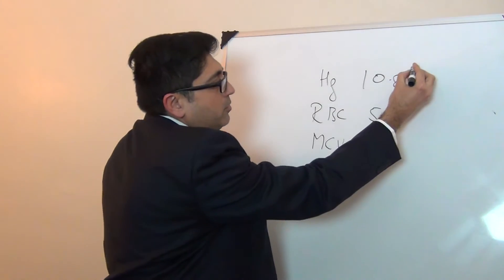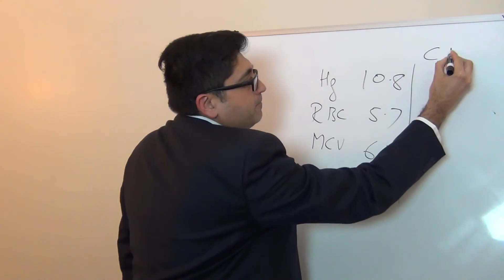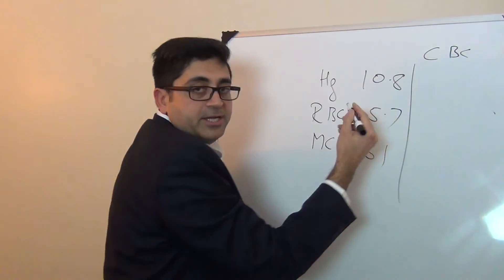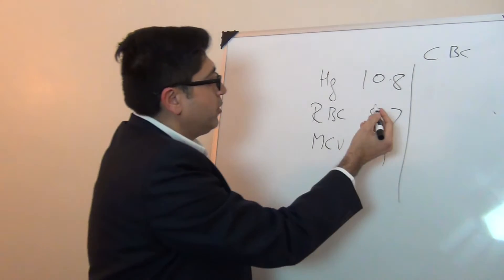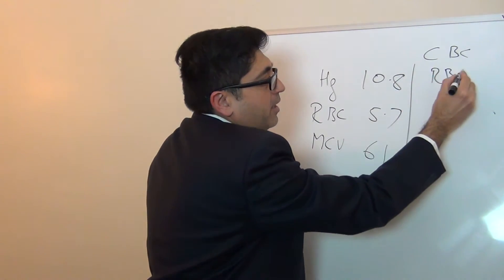As we know in a regular CBC, there is a rule of three. You can calculate from RBC count...